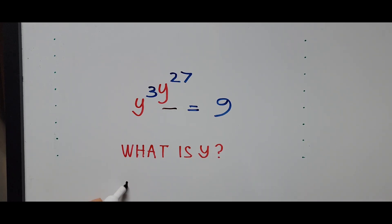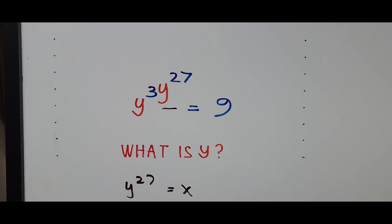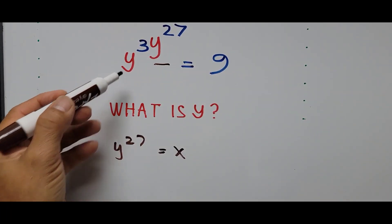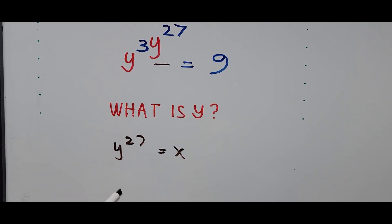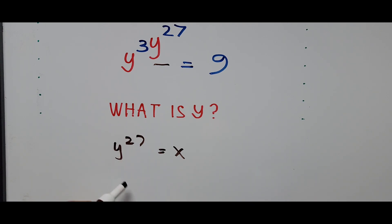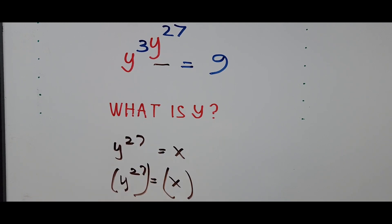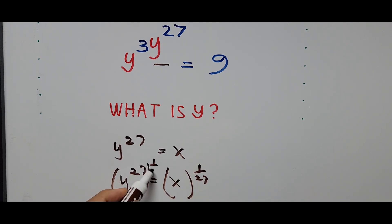We introduce a new variable to represent y raised to 27 power. Since we already have y, I'm going to use x to represent y raised to 27 equals x. To find the value of y from this, we use the equation y raised to 27 equals x. If we raise both sides to the exponent 1 over 27, we do it on the left side and the right side the same way.